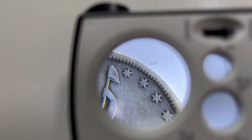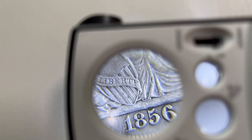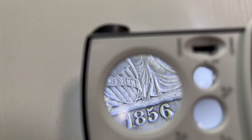So this is the 30x. Looking at this 1856 seated half dollar, you can really see the rich details there.